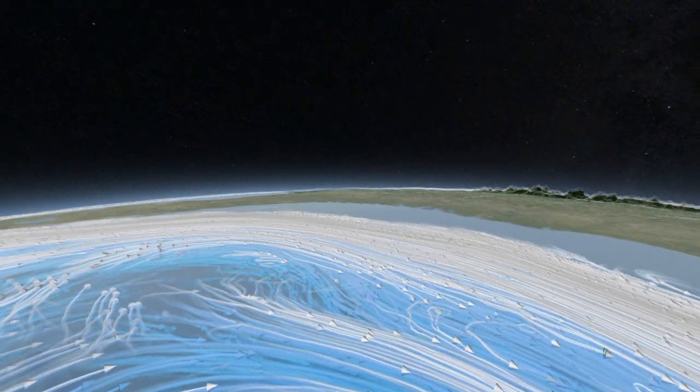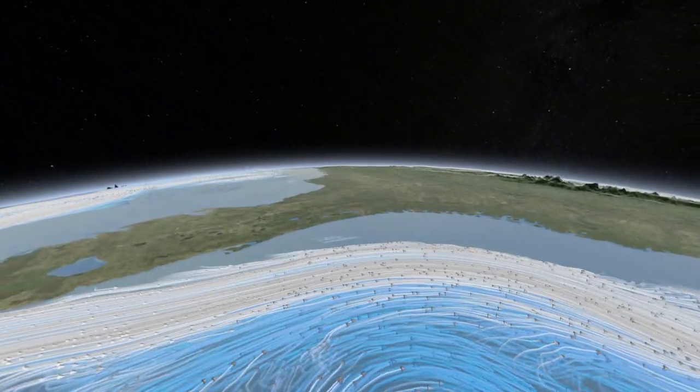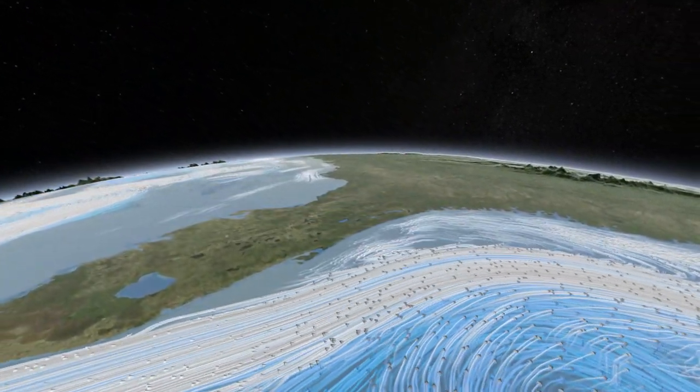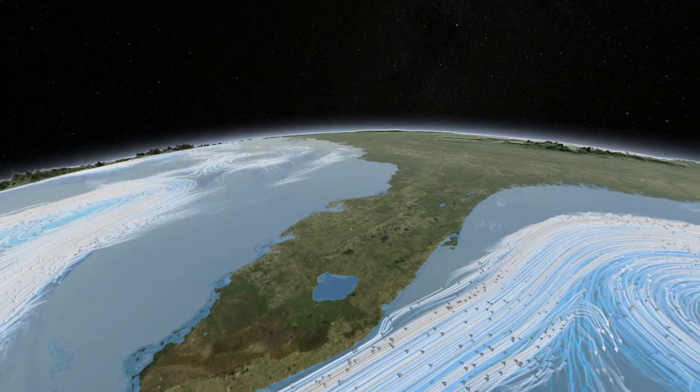Earth's climate engine has countless moving parts: tides and terrain, crosswinds and currents, all working to equalize temperatures around the globe.